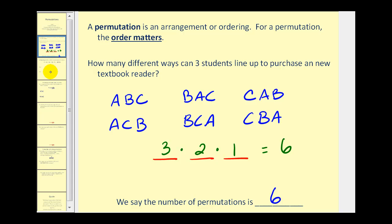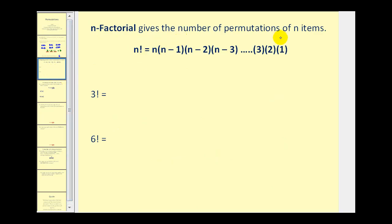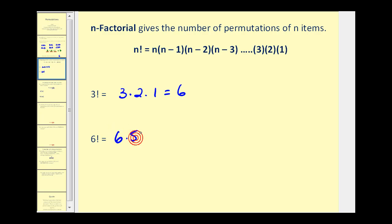Now this brings us to the idea of factorial. N factorial gives the number of permutations for N items. N factorial is equal to N times N minus one times N minus two, all the way down to times two times one. N does have to be a whole number, and by definition zero factorial is equal to one. So three factorial is three times two times one, which equals six. And six factorial would be six times five times four times three times two times one, which equals 720.